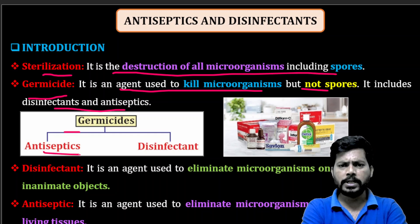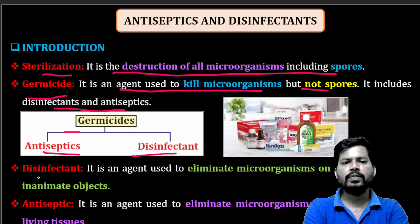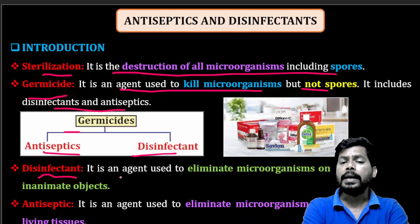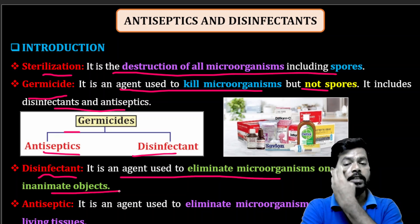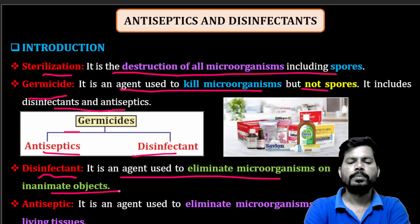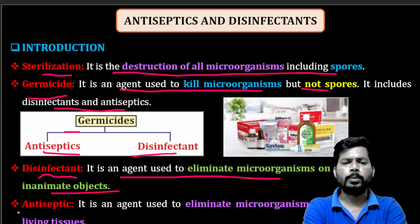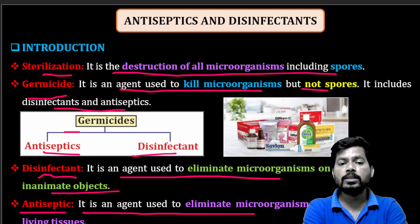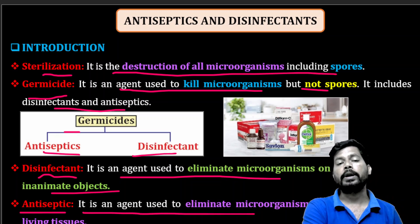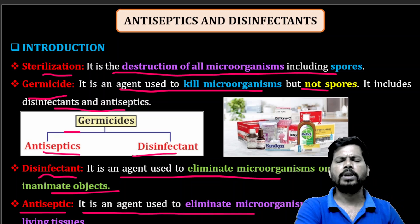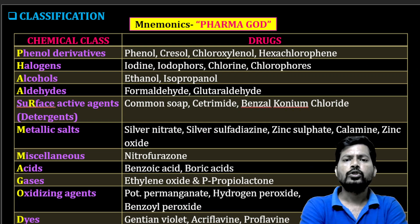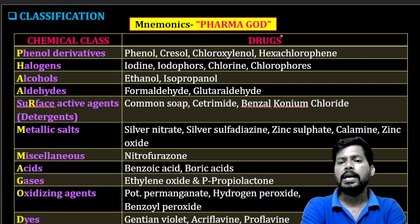Germicides are generally two types: antiseptics and disinfectants. A disinfectant is an agent used to eliminate microorganisms on inanimate objects — for example, floor, ground, tiles, or water. An antiseptic is an agent used to eliminate microorganisms on living tissues, like body parts and skin. Here is the classification of chemical compounds used as disinfectants and antiseptics.